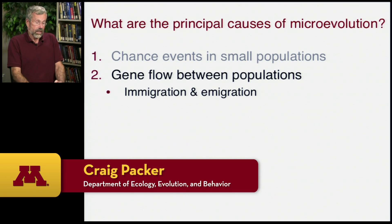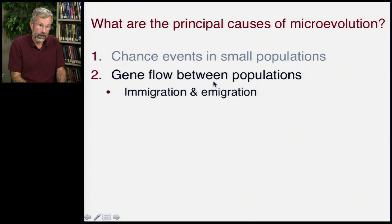Our next force in microevolution is called gene flow. Gene flow between populations results from immigration and immigration.